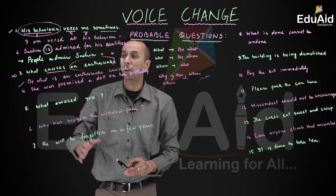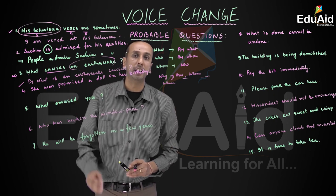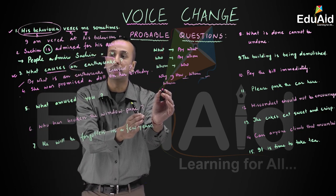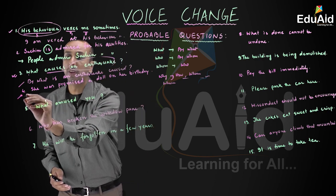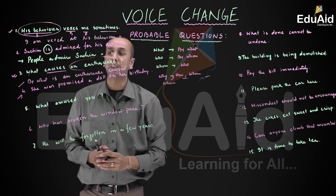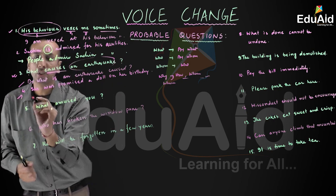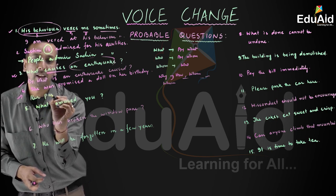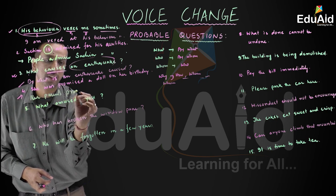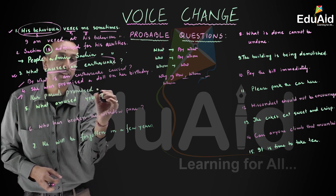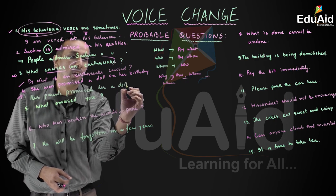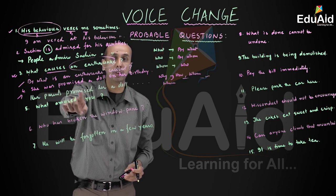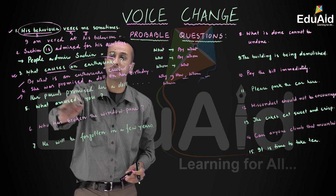Question number four: 'She was promised a doll on her birthday.' Reading the sentence, it is in passive structure — somebody has promised. Going by the agent, we use 'her parents.' The active form is: 'Her parents promised her a doll on her birthday.'